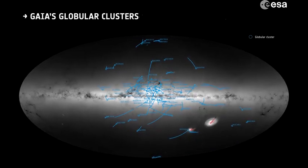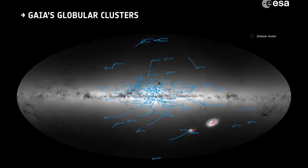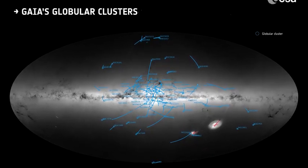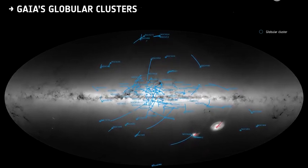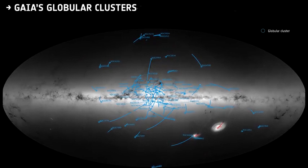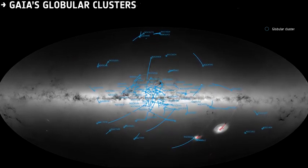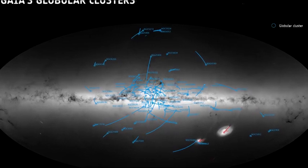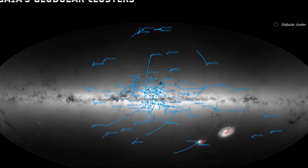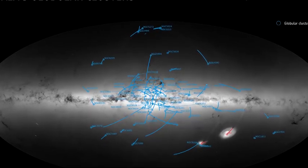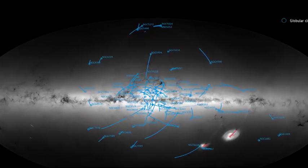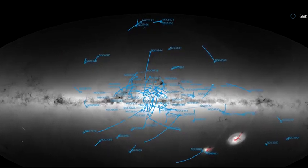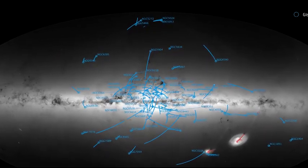In 2018, using both Hubble and Gaia data on globular clusters' sizes and velocities, the mass of our galaxy was estimated to be at least 1.5 trillion times the mass of our sun. This is more than previous estimates and indicates that the Milky Way is among the universe's larger galaxies.